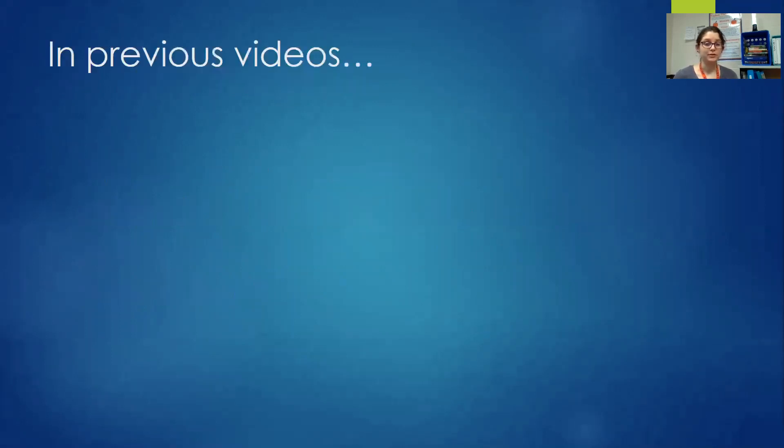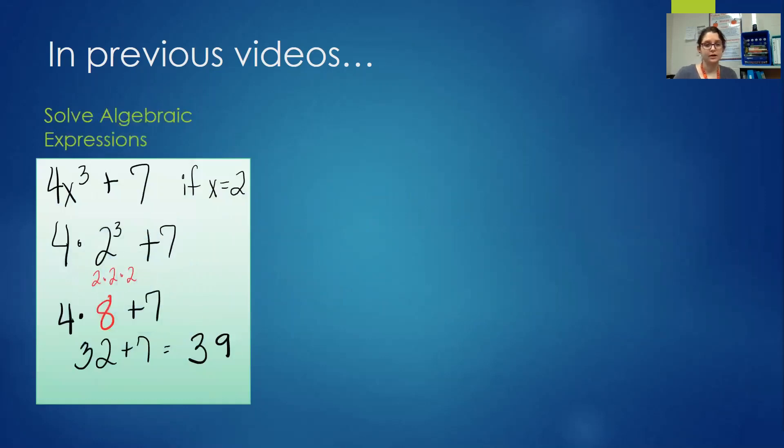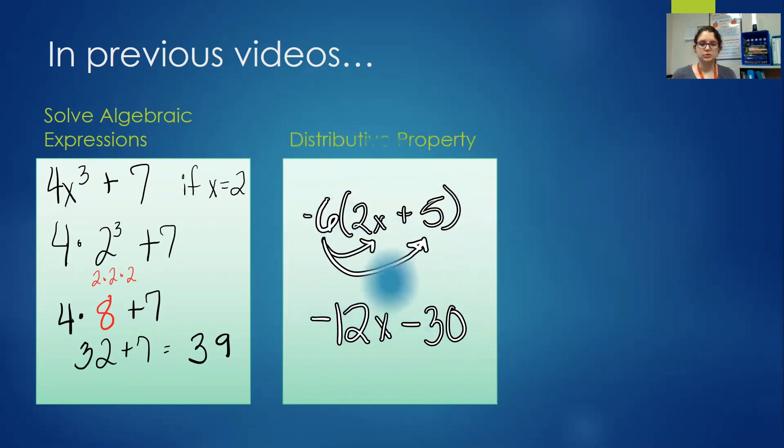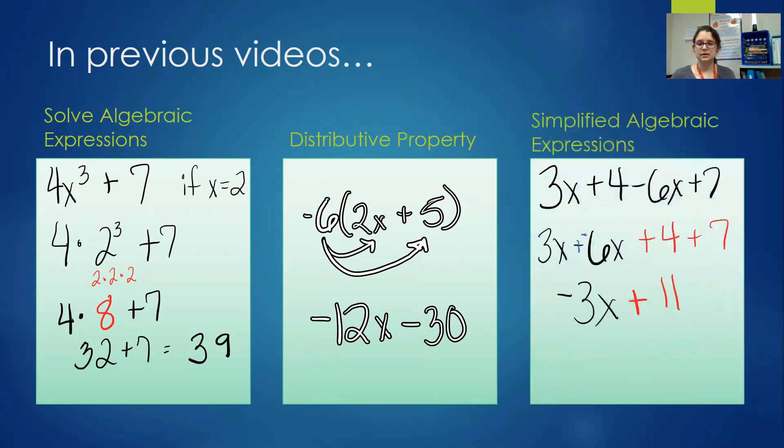In previous videos we've looked at solving algebraic expressions, which is when we are given what the variable equals and are asked to solve for it. We have looked at the distributive property, which is when we share a number just outside parentheses with the operation inside through multiplication, and we have looked at simplified algebraic expressions, also called combining like terms. The links for all of these videos will be posted in the description below if you'd like to review them.